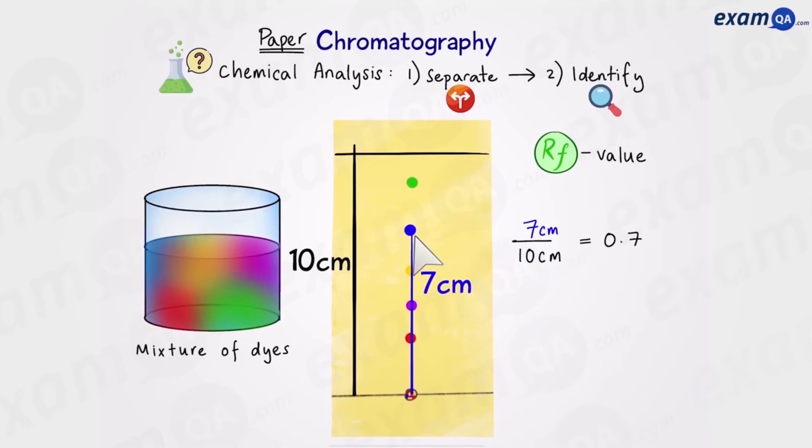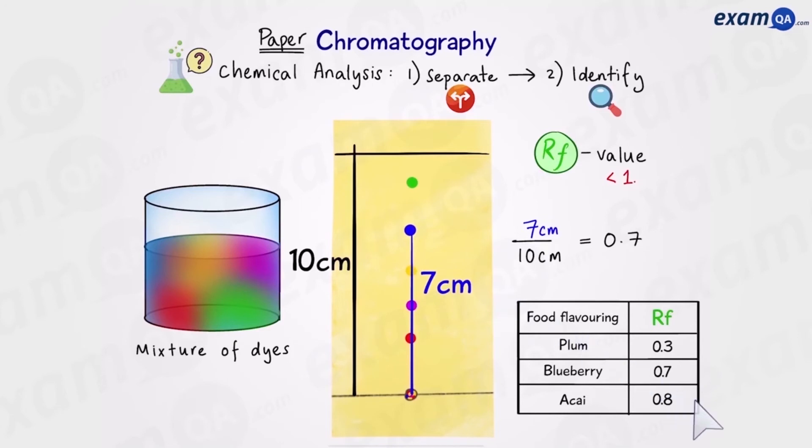Now what do we do with this number? Sometimes they'll give you a table like this. Different dyes and their RF values. From this table we can see that 0.7 indicates blueberry. And we can do the same for all the other spots to work out what they represent.